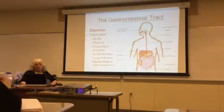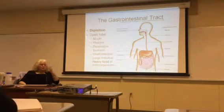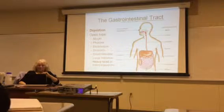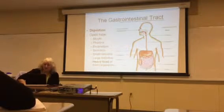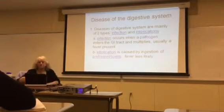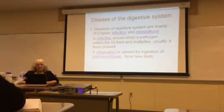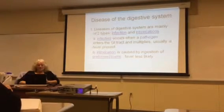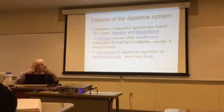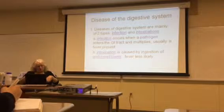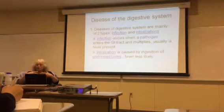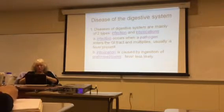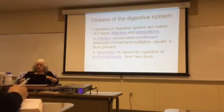Your gastrointestinal tract is just a tube starting at your mouth and ending with your anus, and it has a heavy load of microorganisms. Diseases of the digestive tract are mainly of two different types: either an infection or an intoxication. An infection is when you ingest the pathogen and it gets into your GI tract, and then those bacteria start multiplying in your GI tract.